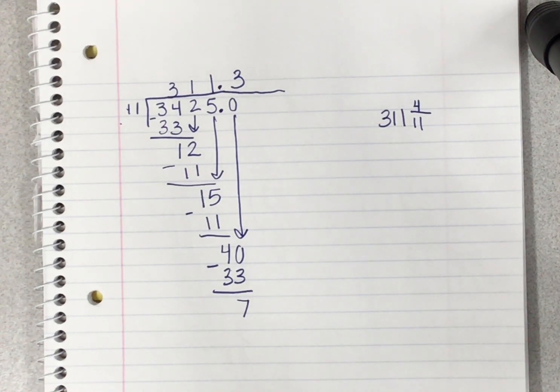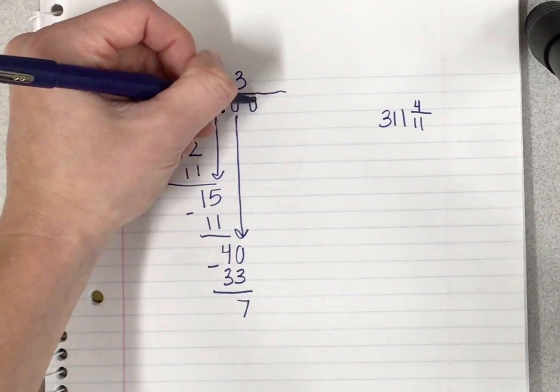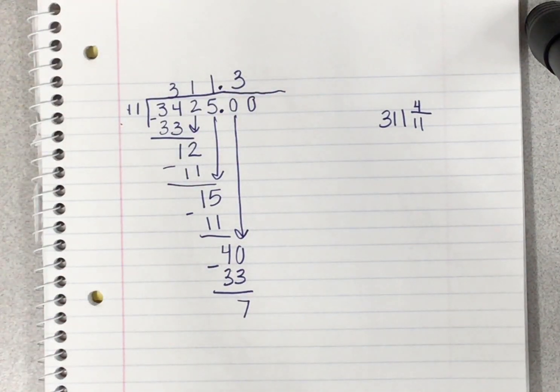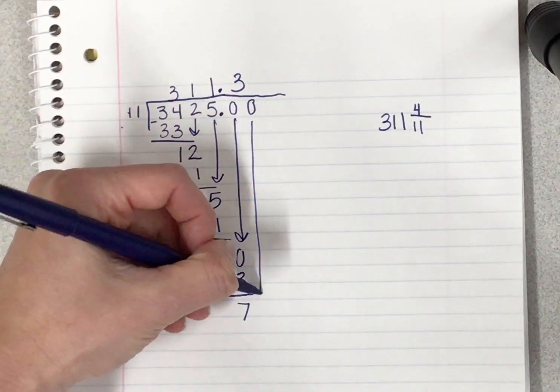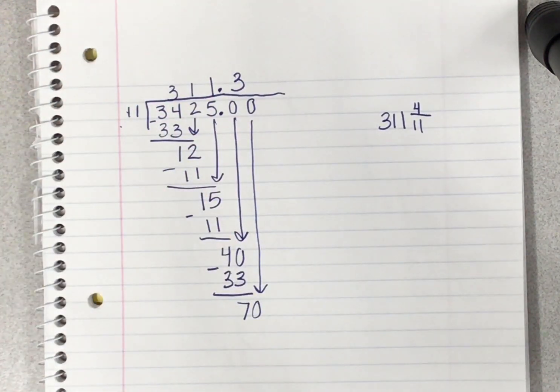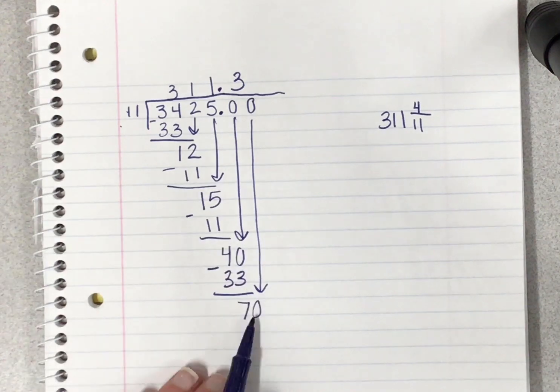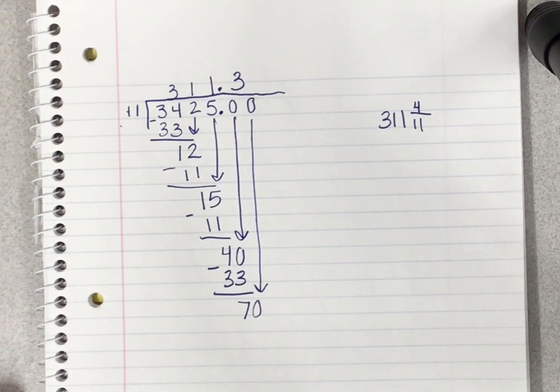Continue going until the third number after the decimal, the thousandths place. So to continue my problem, I continue to add zeros after the dividend, and I continue to drop down zeros so my problem can continue.